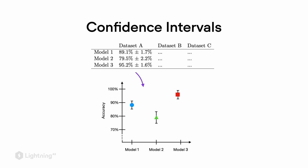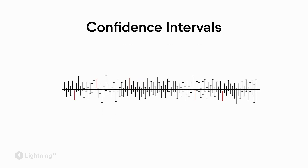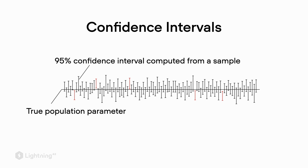So how can we understand confidence intervals? Imagine we draw a very large number of samples from the distribution and apply our confidence interval method to these samples. If we talk about a 95% confidence interval, 95% of the confidence intervals we would draw would contain the actual or true value. Confidence intervals are usually used to compute the uncertainty of our accuracy estimates.